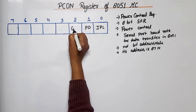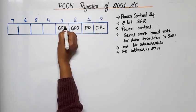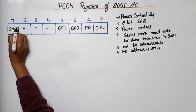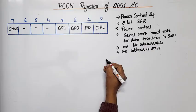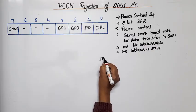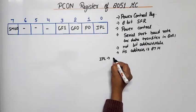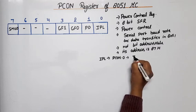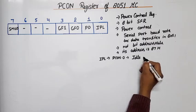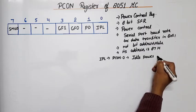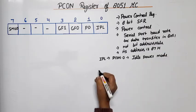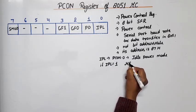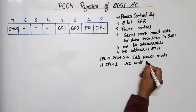Now one by one let's discuss. First bit is IPL or we can say PCON dot 0. This is idle power mode. Means if IPL is equal to 1, microcontroller will enter in idle mode.